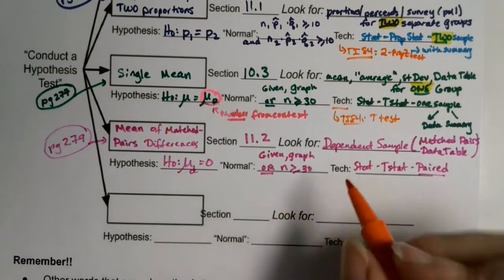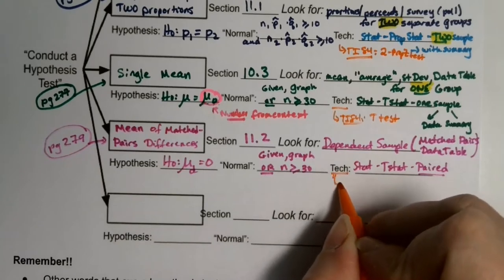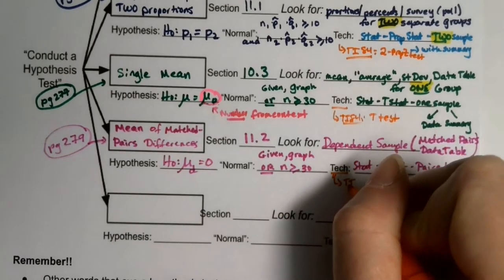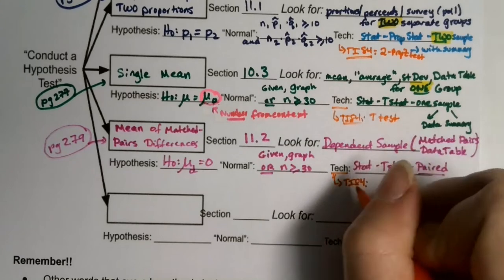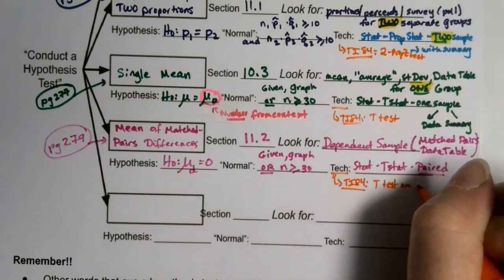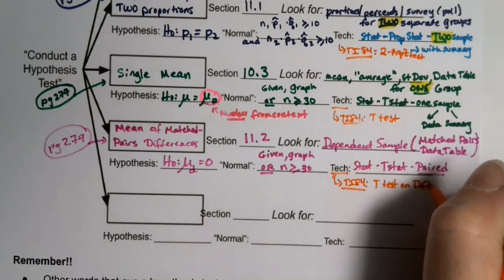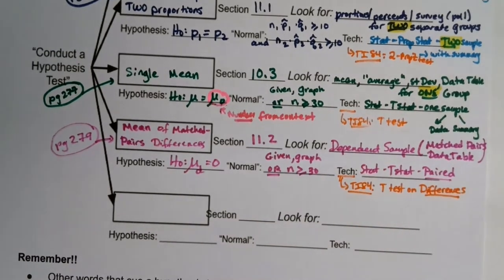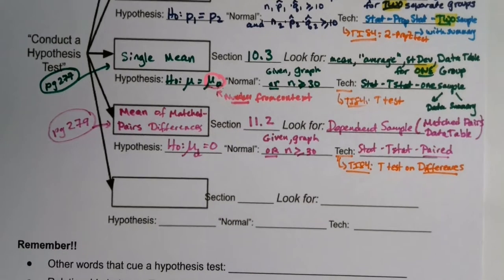If you're on a TI-84, it's actually the same as the t-test, but you run the t-test on the difference column. That's key — you're looking for those differences from the matched pairs table, and you work from that.